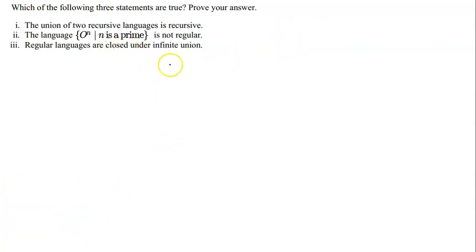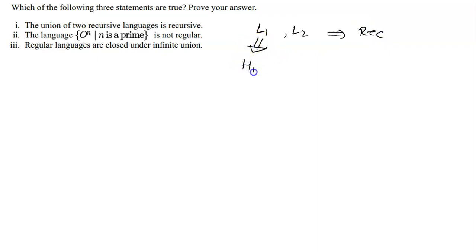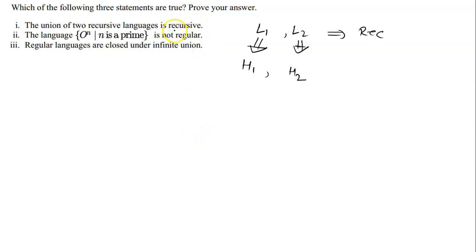Now, the first statement says the union of two recursive languages is recursive — this is true, and we can easily prove it. Assume L1 and L2 are both recursive languages. Since L1 is recursive, we have a halting Turing machine H1, and since L2 is recursive, we have a halting Turing machine H2. We can now construct a halting Turing machine for L1 union L2.